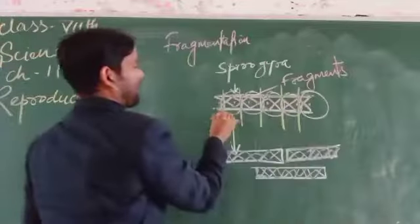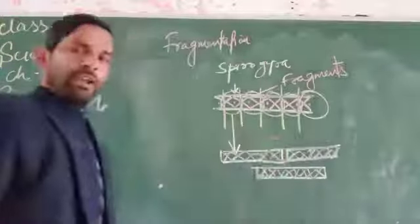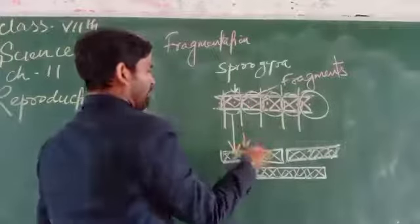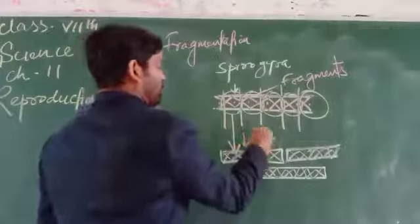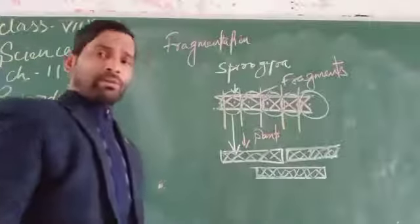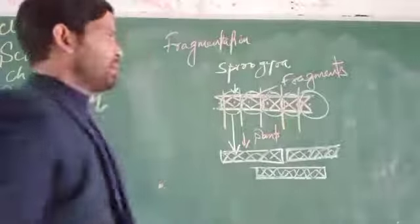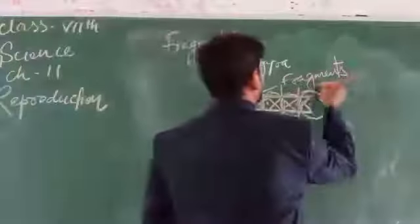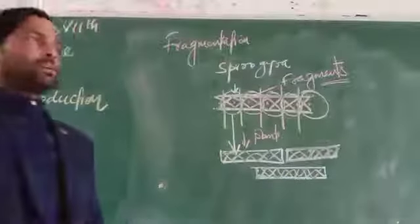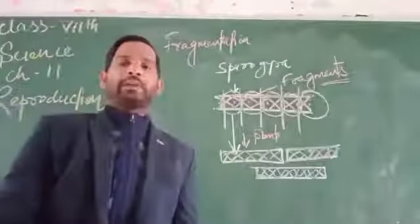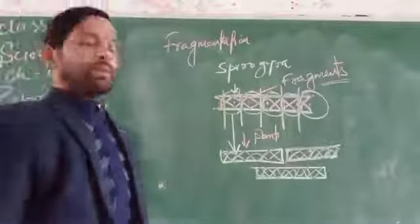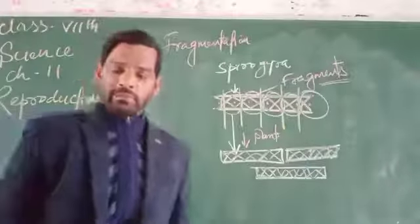The spirogyra gets broken into different fragments, and each has to develop into new ones. So that one is called the process of fragmentation. In case of fragmentation, each part can develop into the new one, and through which the new plant can be germinated.